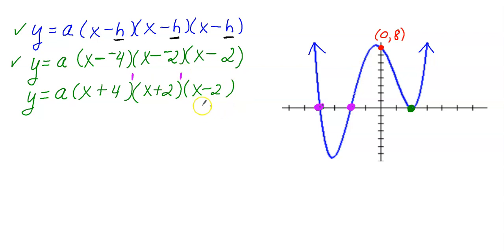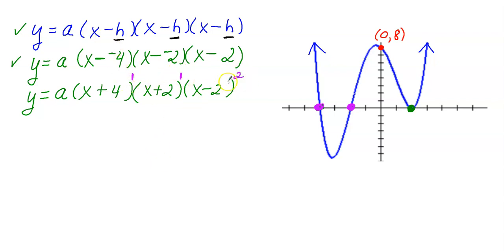For the last factor X minus 2, the corresponding X intercept is positive 2. Looking at the graph there, it bounces at X equals 2 — it does not cross through. When it does a clean bounce like that, the exponent is 2. So: exponent 1 means it crosses straight through, exponent 2 means it bounces.